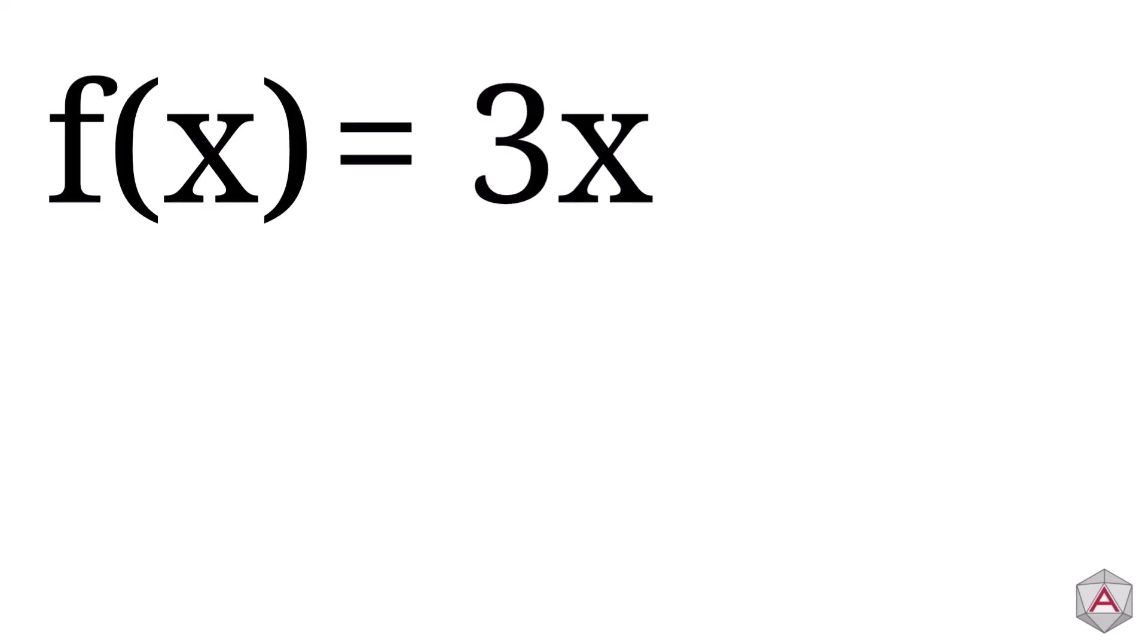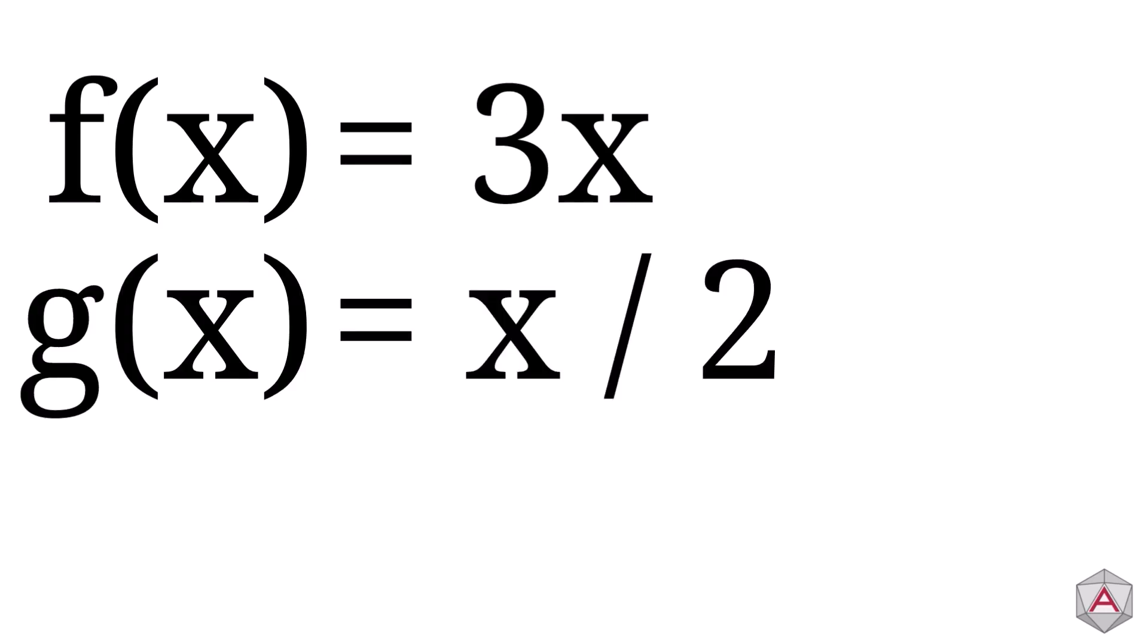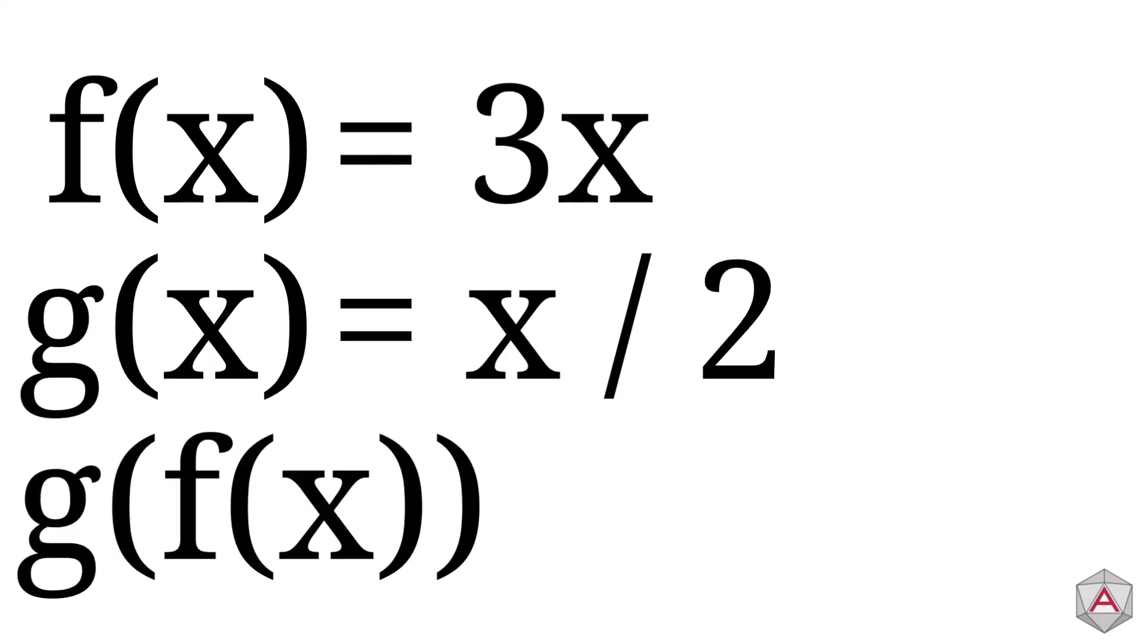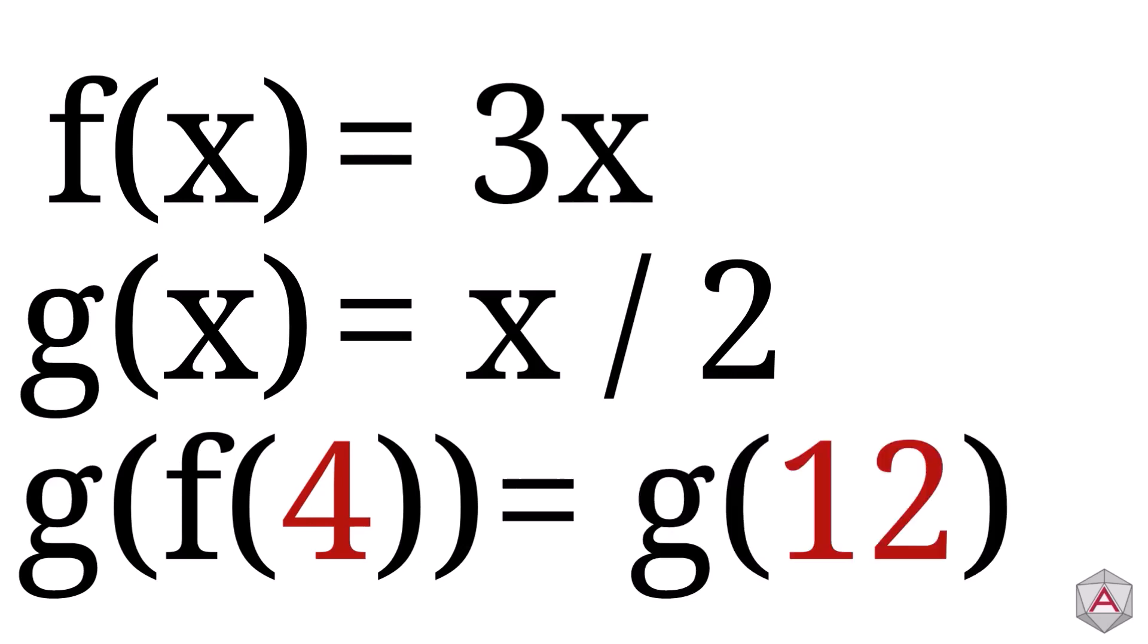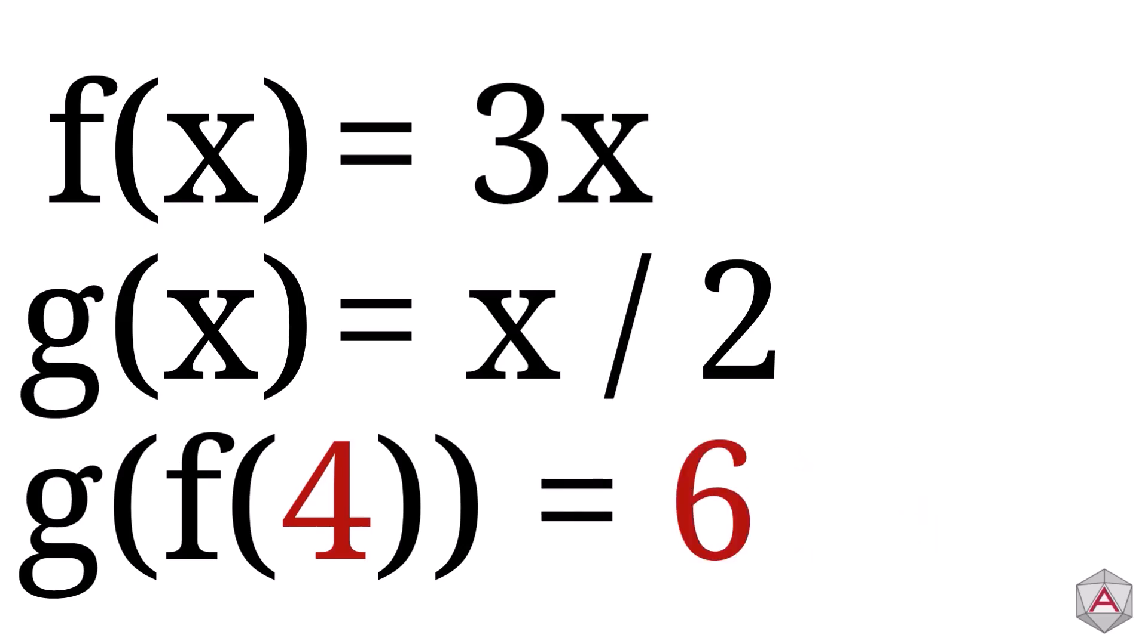Another cool thing we can do is chain these functions. If we have f equals 3x and g equals x divided by 2, then we can have g of f of x. Let's try this for x equals 4. First, we go to the innermost function to get f of 4, so 3 times 4 is 12. Then, 12 goes into our g function, and we divide it by 2 to get 6. So g of f of 4 is 6.